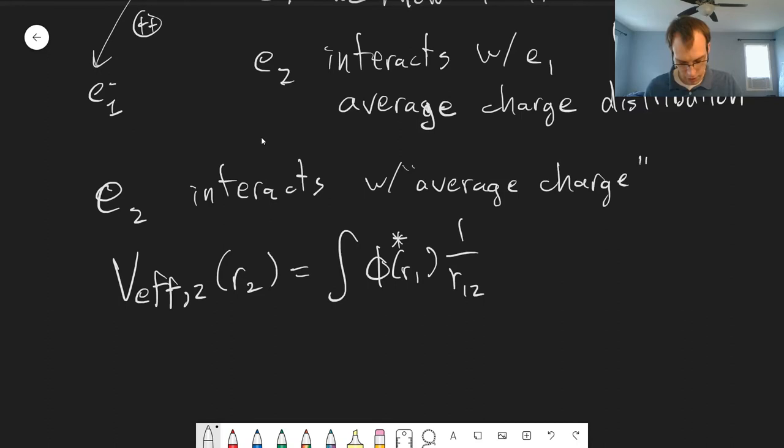So we have our phi(R1), our wave function for electron one, and then we have our electron-electron repulsion term here. And essentially what we're doing is taking an expectation value here, like what's the average.